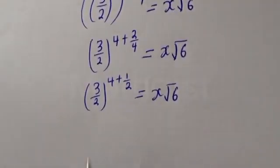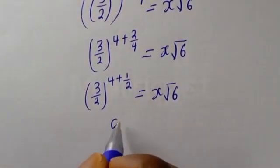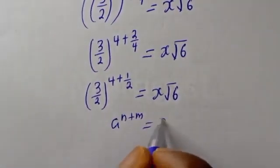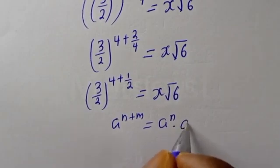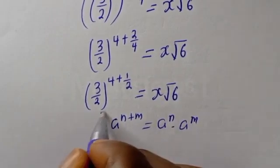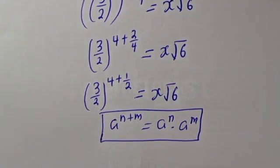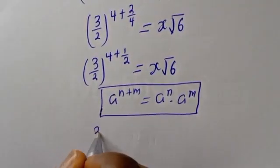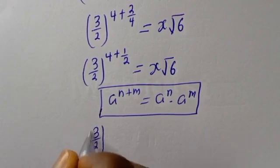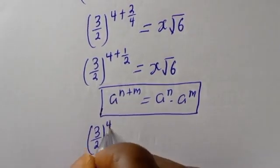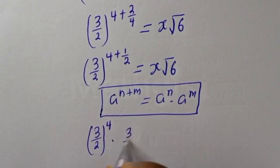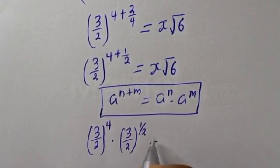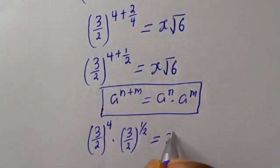Now, if you have a raised to the power n plus m, this is equal to a raised to power n multiplied by a raised to power m. So this can be written as 3 over 2 to the power of 4, multiplied by 3 over 2 to the power of 1 over 2, is equal to s root 6.